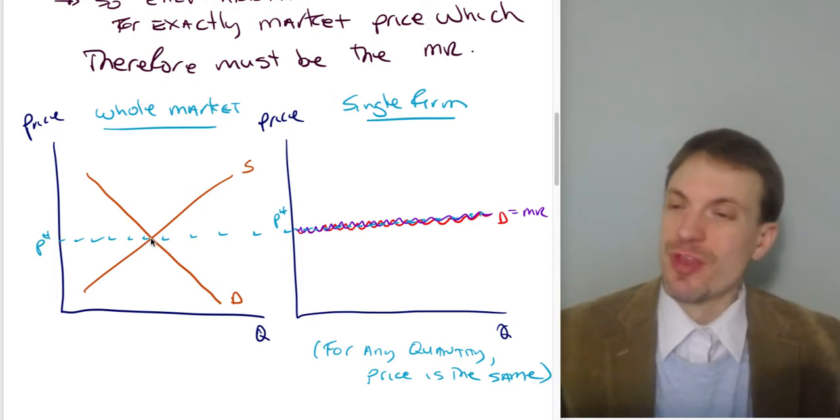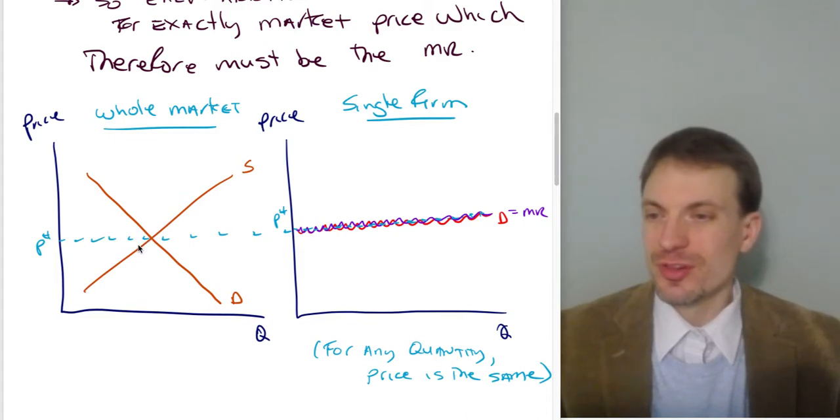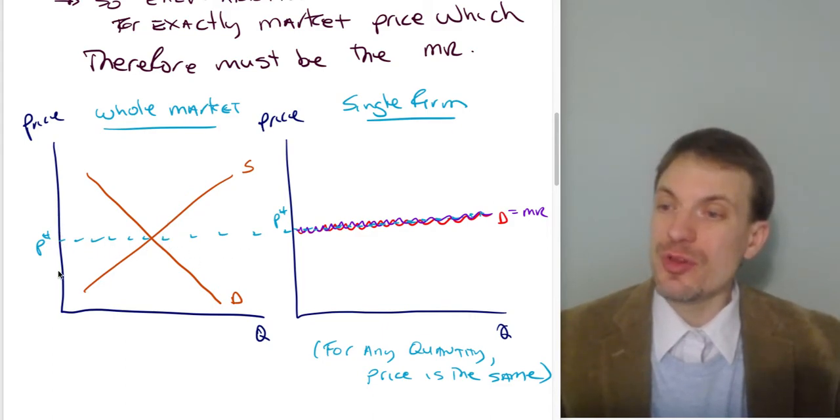You can imagine if there was a shift of the demand curve along a stationary supply curve, market price would rise. There's a leftward shift of the demand curve against a stationary supply curve, market price would fall, or you can think of supply shifting. And what would that do? That would raise or lower the market price.